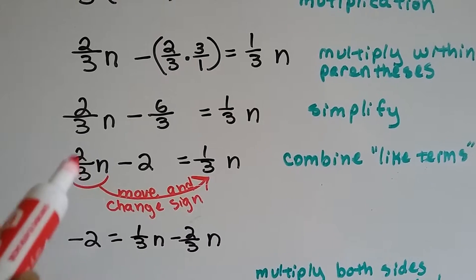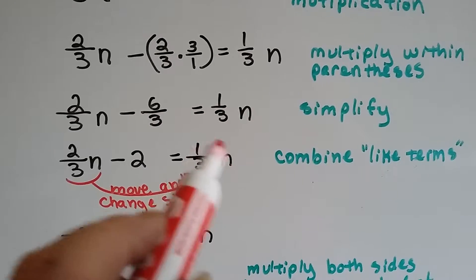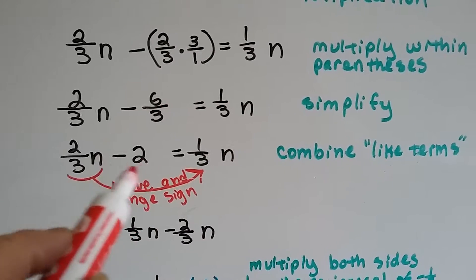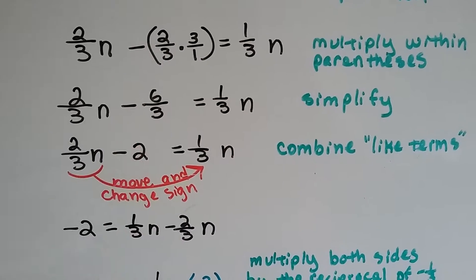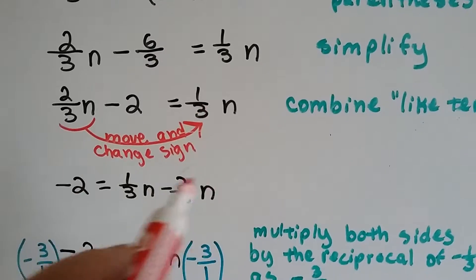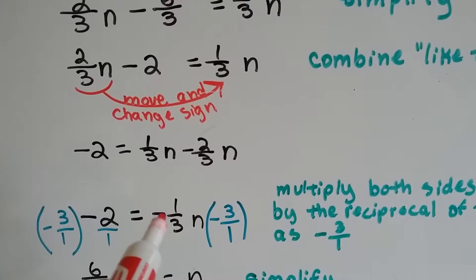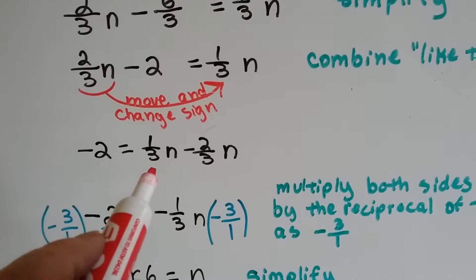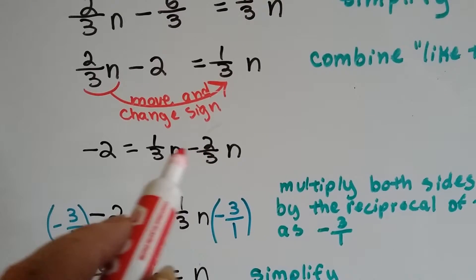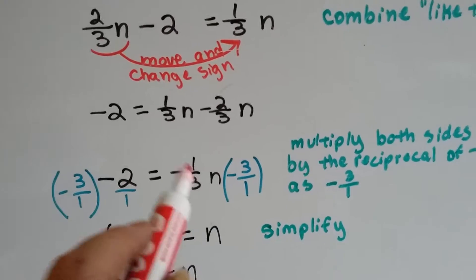So, now we need to get this 2 thirds n to this side of the equation so that all the variables are on one side and then the negative 2 is on one side. We've got to change the sign to do it. So, now we have 1 third plus negative 2 thirds. Well, that's going to give us a negative 1 third. If we have 1 third and we take two 1 thirds away, we're going to be negative 1 third.